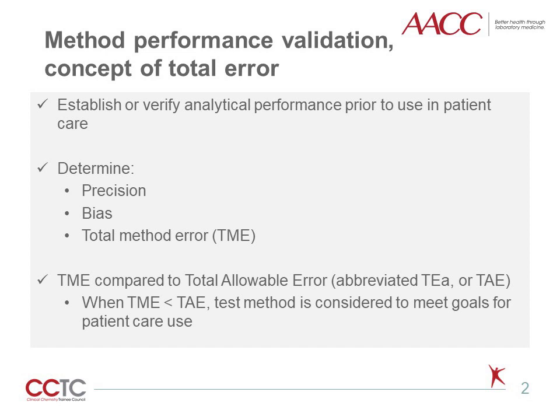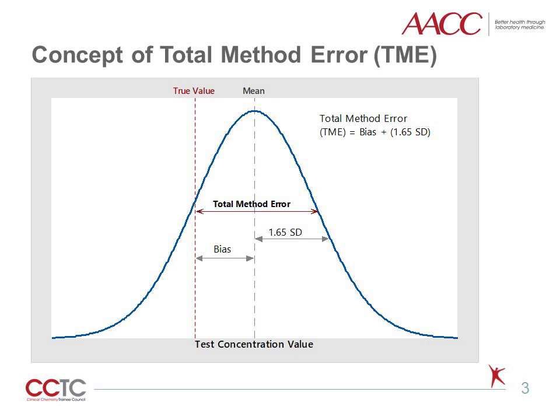When total method error is less than total allowable error, the new test method is usually considered to have met the necessary requirements for patient care use. TME is calculated from bias and standard deviation values obtained from method comparison experiments. The figure shown illustrates a positive bias with the new test method as compared to the true value established by a reference standard or other comparative method. Imprecision follows a Gaussian distribution, calculated using a Z value at the desired probability level. The traditional calculation is TME equals bias plus 1.65 times standard deviation.